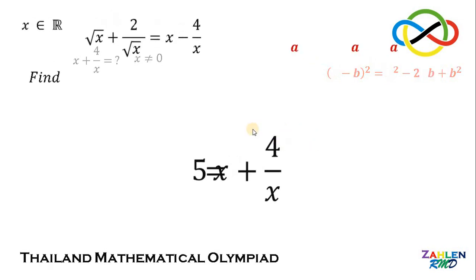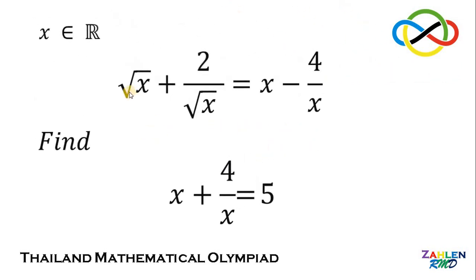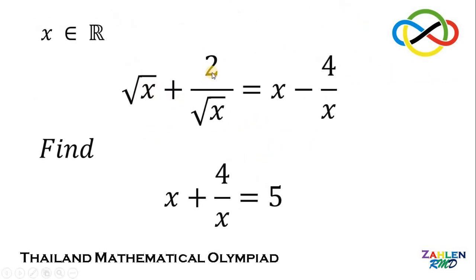Therefore, given the equation square root of x plus 2 over square root of x equals x minus 4 over x, the value of x plus 4 over x must be 5. And as always, we are done.